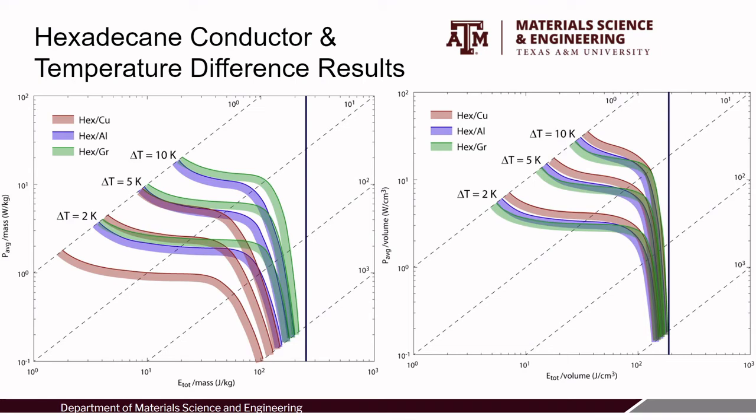Broadening the question, we look at using different materials as conductors at different inlet temperatures. These different materials demonstrate how different design metrics of interest change the optimal module. For example, our hexadecane copper module performs much worse in energy and power per unit mass due to the higher density of the copper, but this module is quite competitive when viewing energy and power per unit volume. Looking at inlet conditions, there are major changes in power as the driving force of heat transfer increases or decreases, but it only has a minor impact on the energy density. At these temperature levels, the latent heat is dominant over sensible heating.